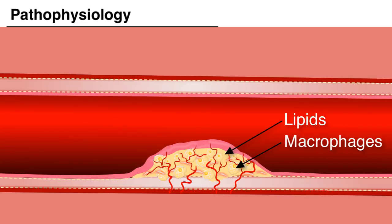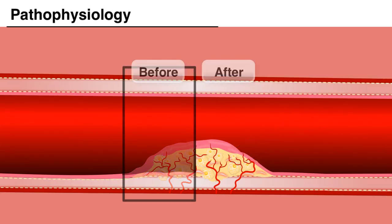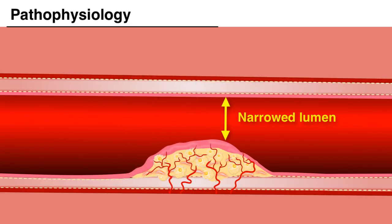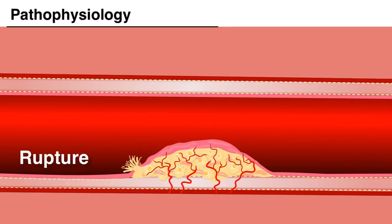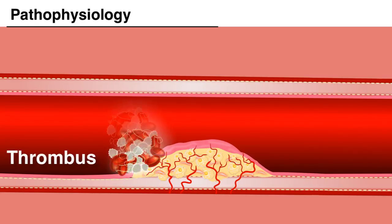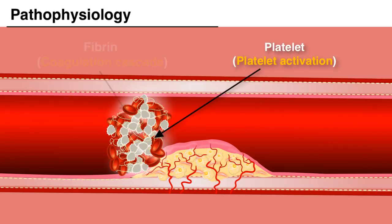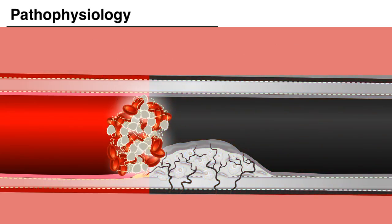These atherosclerotic plaques develop over years and are composed of macrophages and lipids. Some plaques may also be calcified. Over time, a plaque may progressively narrow the lumen without provoking any symptoms, as the lumen remains for the most part patent. Acute coronary syndromes are caused by an acute rupture of a long-standing coronary plaque with subsequent thrombus formation and acute subtotal or total occlusion of the coronary artery. When the plaque ruptures or ulcerates, a cascade is triggered with platelet activation and activation of the coagulation cascade. The resulting acute narrowing of the lumen by thrombus will cause myocardial ischemia.